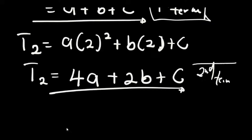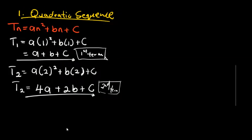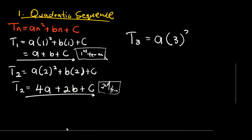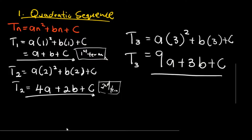For the third term, T3, we substitute n = 3, giving us a(3²) + b(3) + c. Since 3² = 9, this becomes 9a + 3b + c. So this is our third term of the sequence.